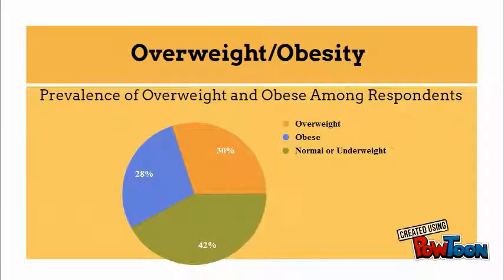The topic of overweight and obesity was a top five overall and childhood public health concern for respondents. Overweight and obesity rates throughout the nation have been increasing over the past several decades. 22 states have obesity rates higher than 30%. In 2014, Missouri's adult obesity rate was 30%.